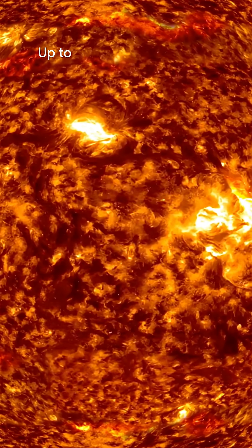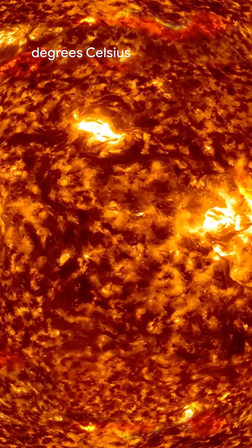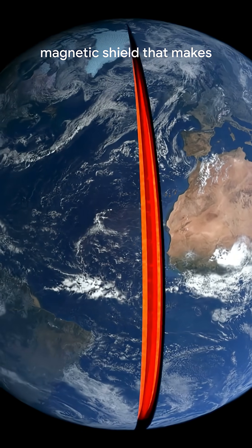Earth's core, up to about 7,000 degrees Celsius, powering the magnetic shield that makes life possible.